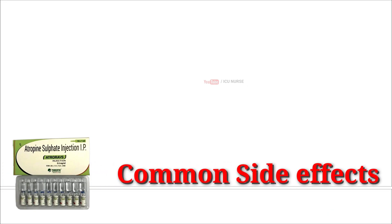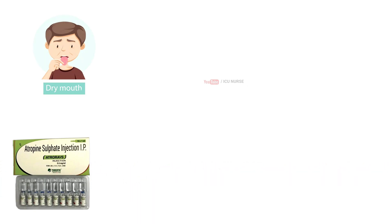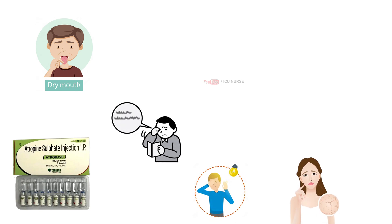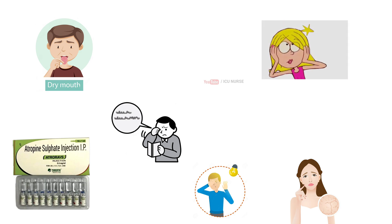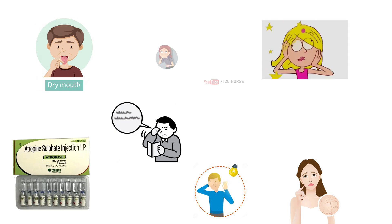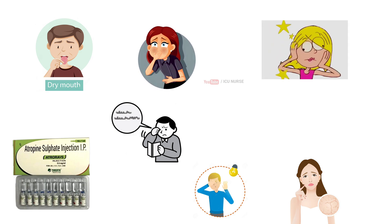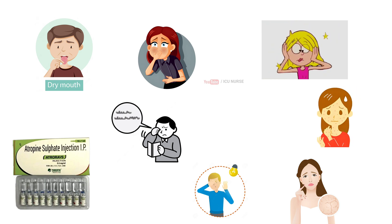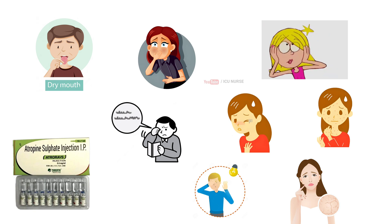Common side effects of injection atropin include dry mouth, blurred vision, sensitivity to light, lack of sweating, dizziness, loss of balance, nausea, hypersensitivity reactions such as skin rashes, and rapid heart rate — tachycardia.